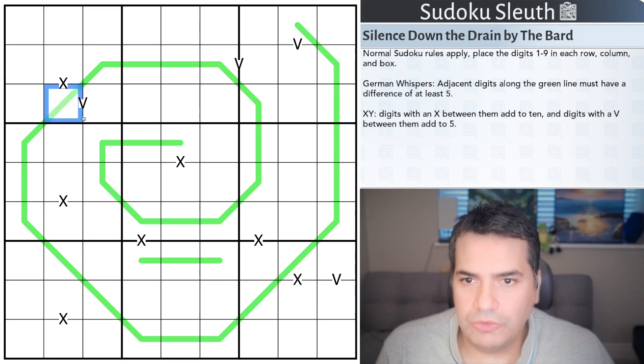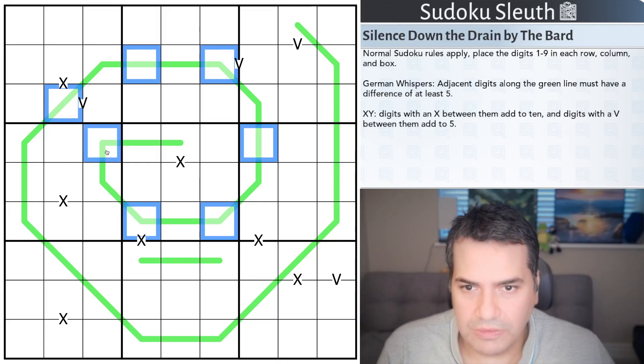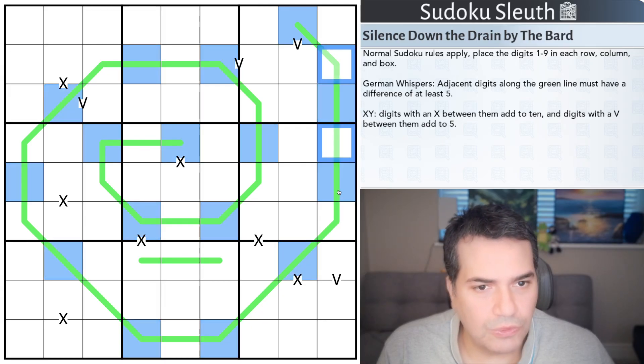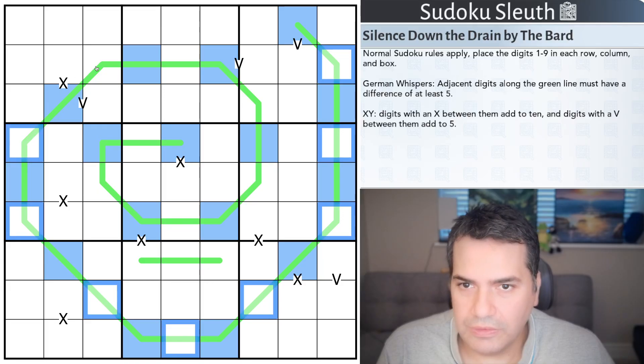Right. So we know that polarities oscillate. We know that for a V, you've got to have low digits. You can't have something like six or seven add up to five, at least not without negative numbers. So we know that all of the following digits are going to be low.